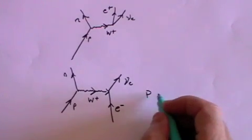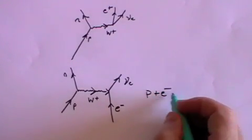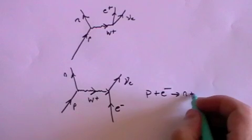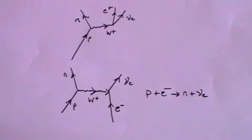And that is, in essence, the proton plus the electron produces a neutron plus an electron neutrino.